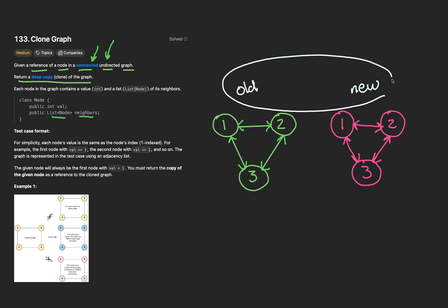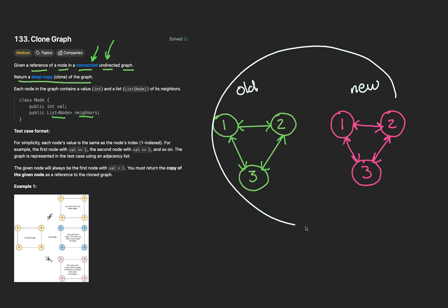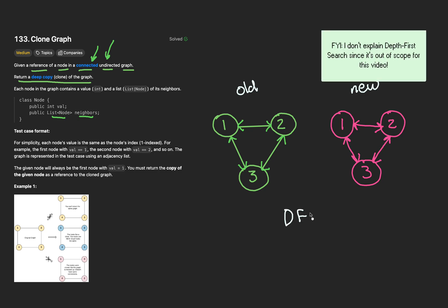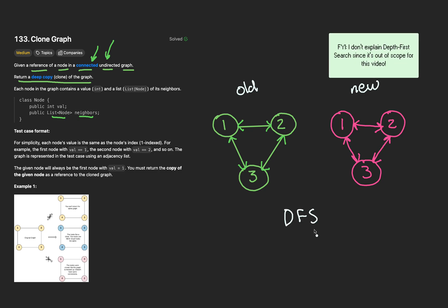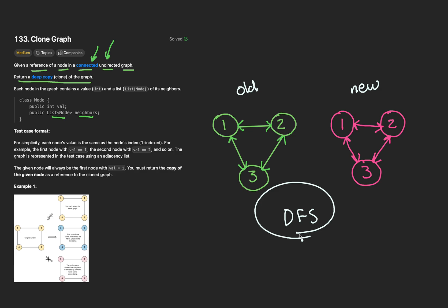I'll be referring to the input graph's nodes as old nodes and the deep copied ones as the new nodes — it'll make it much easier to distinguish the two. As per usual with trees and graph problems, we shall use the depth-first search algorithm. Let's dispatch a DFS function and try to intuitively solve this as we go, rewinding to earlier parts of our thought process when we need to.